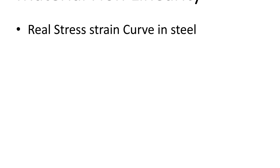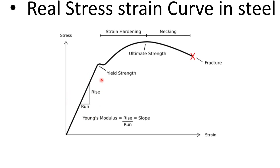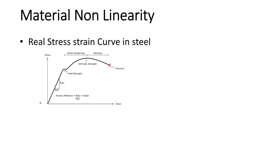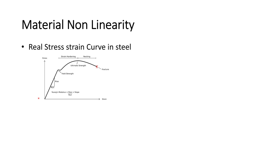Now let's discuss material non-linearity. The first part of the stress-strain curve is called the elastic zone, where the relationship between stress and strain is linearly proportional. This is no longer the case once stress exceeds the yield strength. The material afterwards continues to take more stress, but with each increment the material strains more and more until it finally fractures. This real model is, however, too complex, so alternative models are used by structural engineers — the most common being the following two.